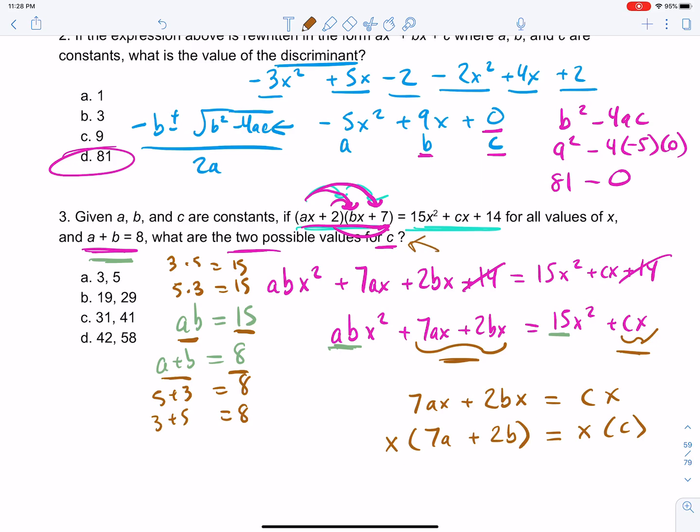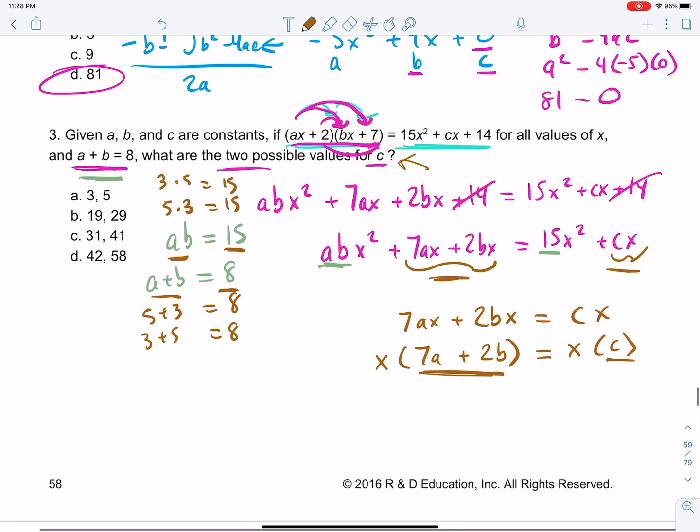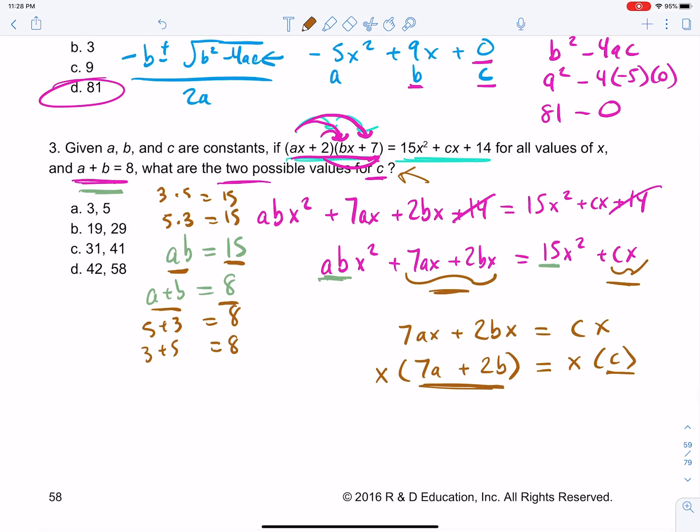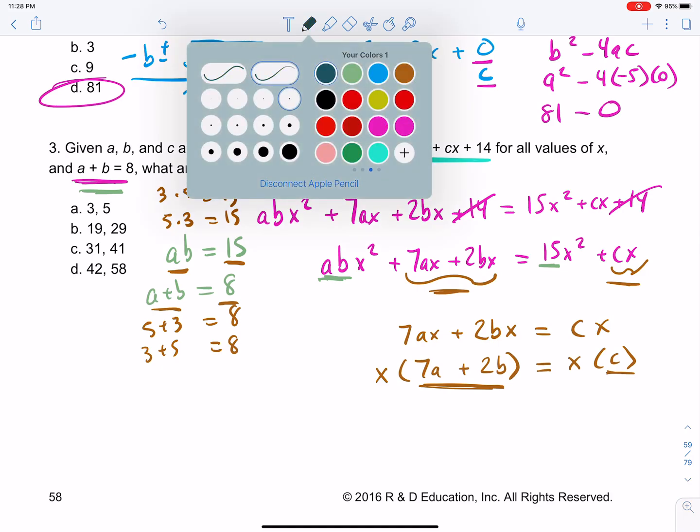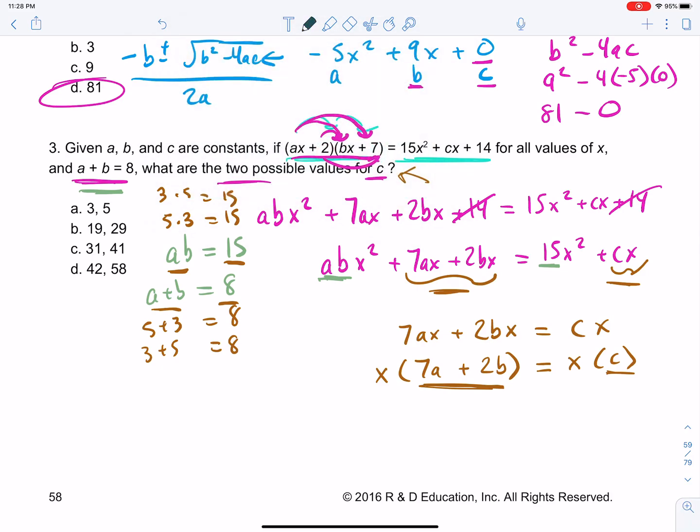Remember, it's asking for two possible values of c. Well, if c is equal to this, if c is equal to 7a + 2b, here's all we have to do. All we have to do is put in our two values. In fact, you can even, if you want to, to make it really clear, you can get rid of your x. You can divide both sides by x. And then there you go. And now we're basically done.